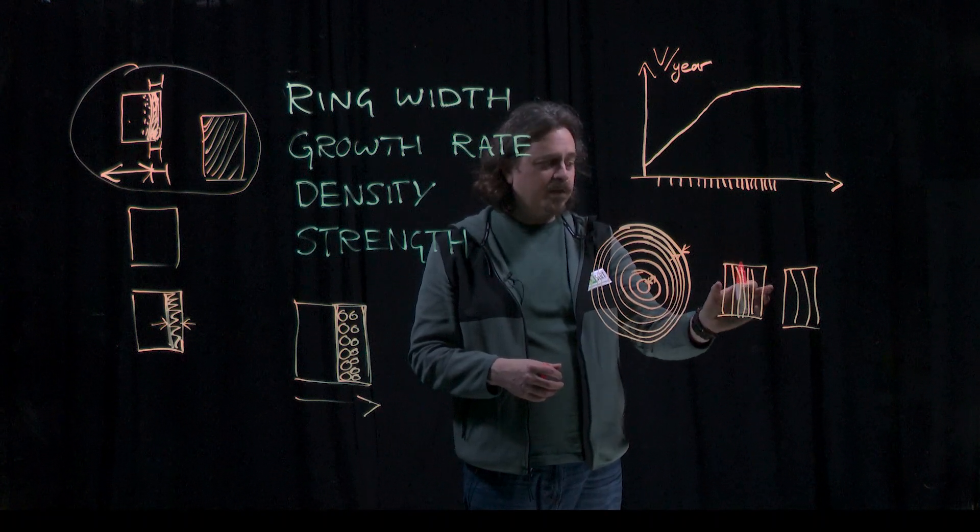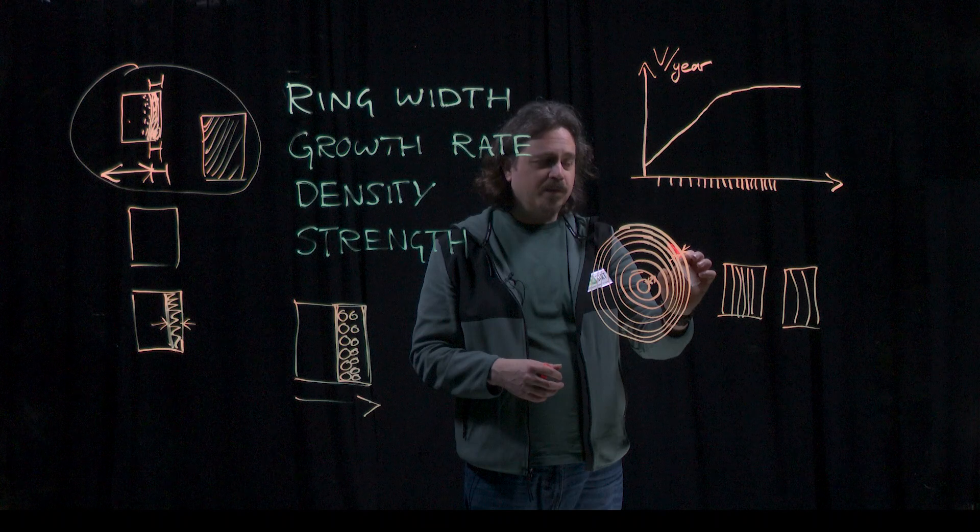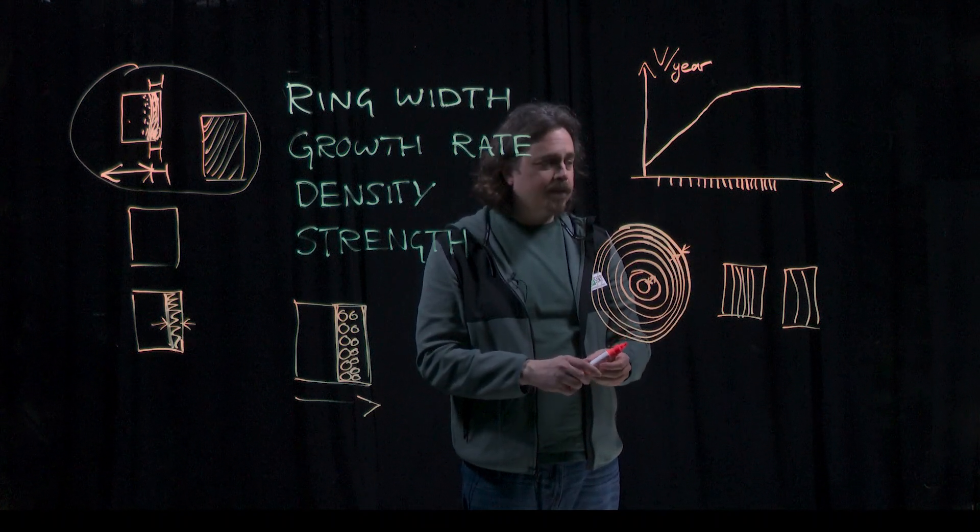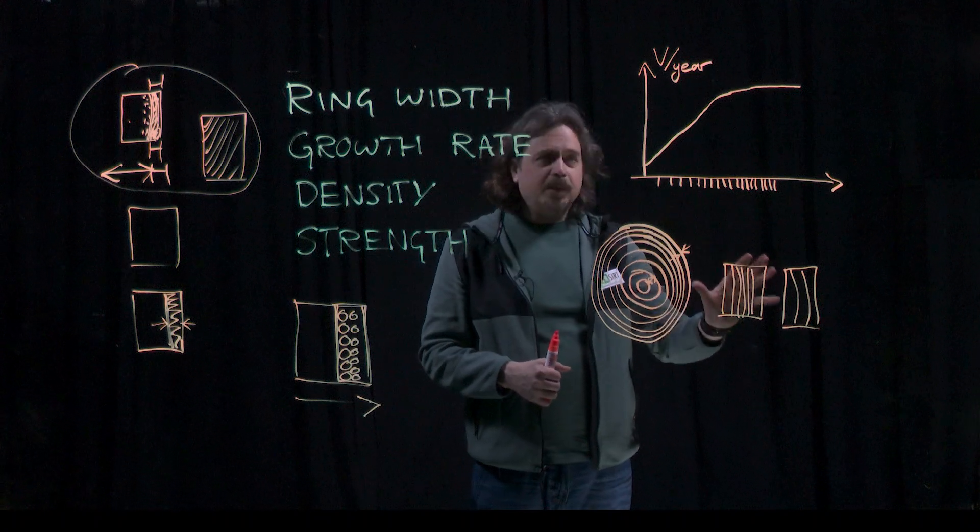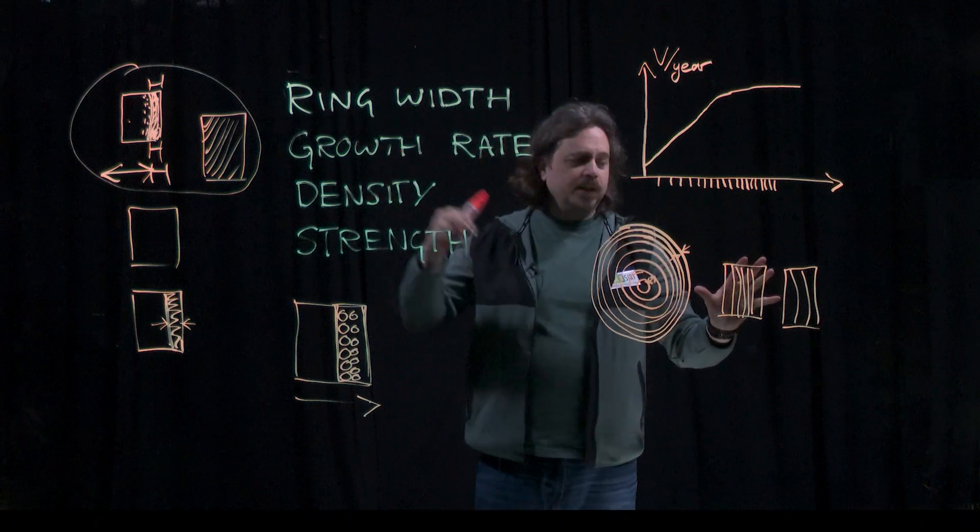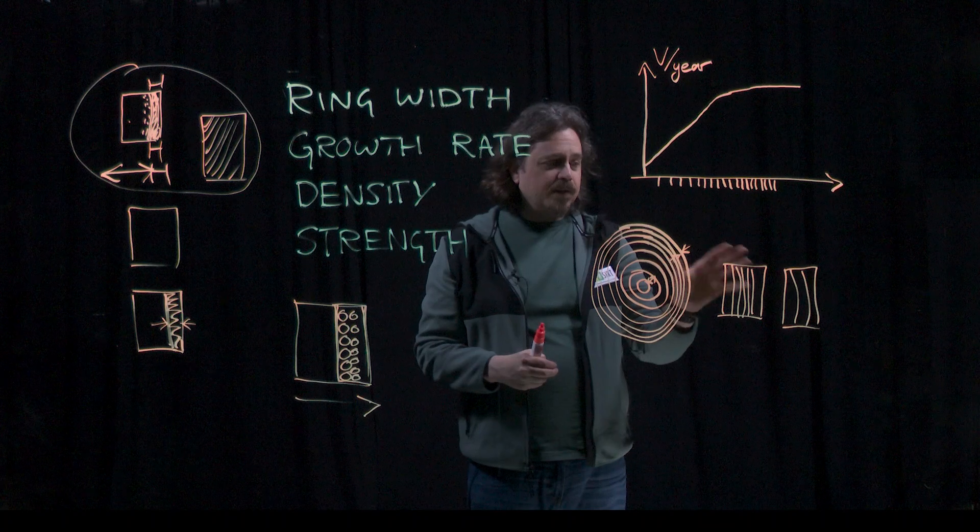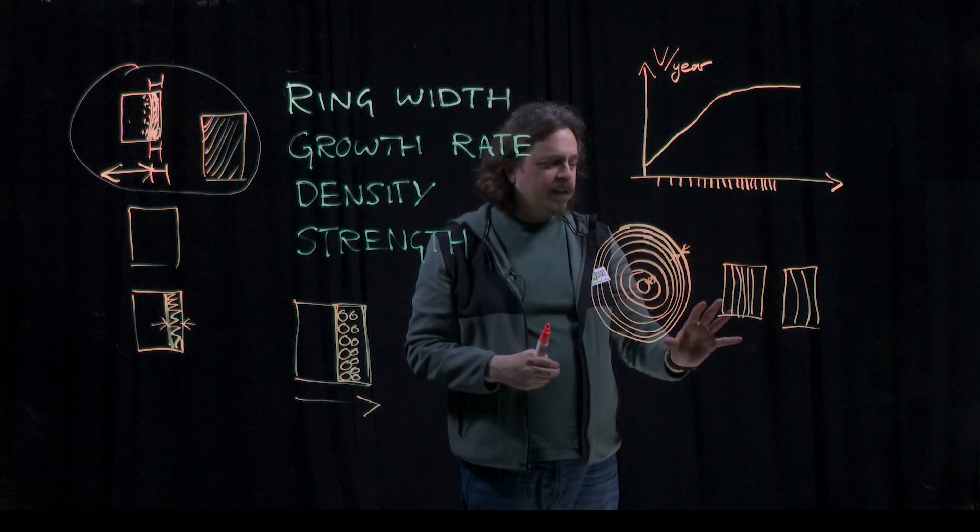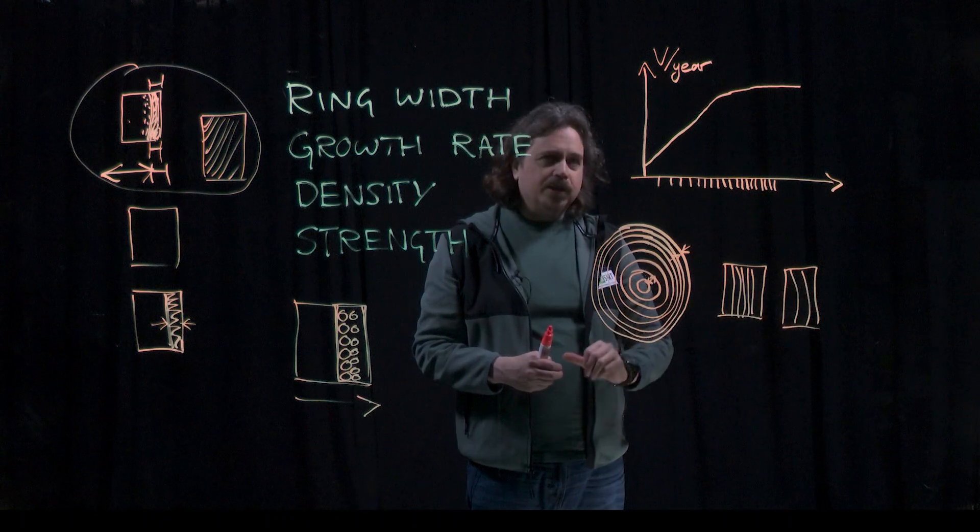So if you have small growth rings, it's an indication that it's coming from the outside of the log, which is an indication that it has better wood properties. So actually it's not ring width directly and not growth rate of the tree, which is helping you determine something useful about the mechanical properties. It's that ring width is telling you something about radial position.